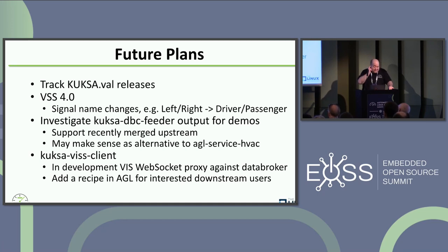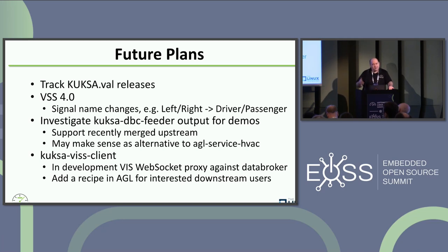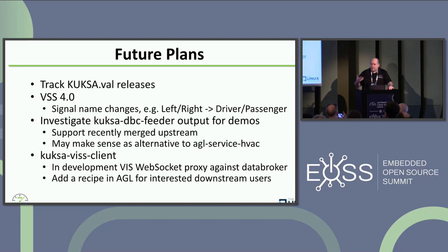The last new thing I just learned about last week is they're developing a proxy. The data broker doesn't implement pure VIS — the gRPC protocol is sort of its own thing. It looks very similar to VIS, but it's not a WebSocket. There's a Kuksa VISS client up on GitHub that's going to migrate into Kuksa proper. It will basically be a proxy between the data broker and the VIS WebSocket interface. We probably can't fully convert to gRPC, so having this proxy available to build in AGL would be useful. If you come along for our end-of-year release, you'll likely see a recipe and something to exercise and show it off.